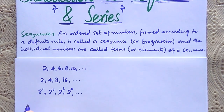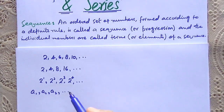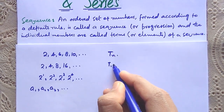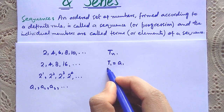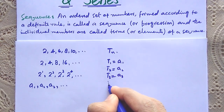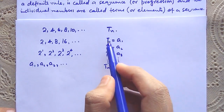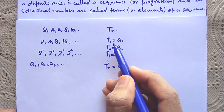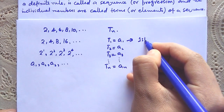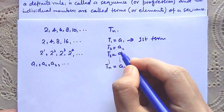We represent a sequence as a1, a2, a3, and so on. Now let me denote the nth term of the sequence by tn. So t1 equals a1, t2 equals a2, t3 equals a3, up to tn equals an. Here the suffix indicates the position or rank of the term — t1 is the first term, t2 is the second term, t3 is the third term, and so on.